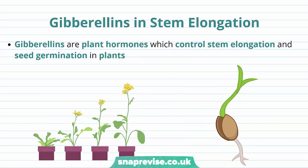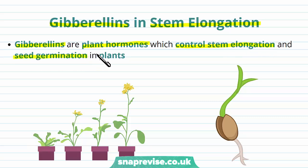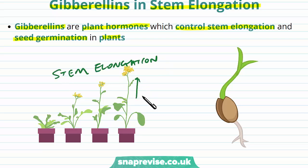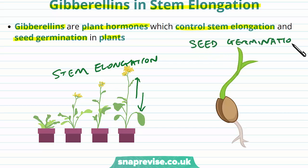Another important group of plant hormones are known as gibberellins, and they're important in the process of stem elongation — making the stem longer. Gibberellins are a family of plant hormones that control stem elongation and also seed germination in plants. Stem elongation refers to the stem increasing in length to make the plant grow taller, and seed germination refers to the hatching of the seed to grow a stem and begin growing roots so it can develop into a plant.